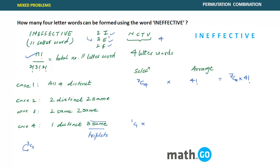For the one distinct letter, many students mistakenly write 4C1, picking only from N, C, T, V. But you can also pick I or F. So the distinct letters available are I, F, N, C, T, and V — six options — giving 6C1. The arrangement is 4!/3! since three letters are the same.